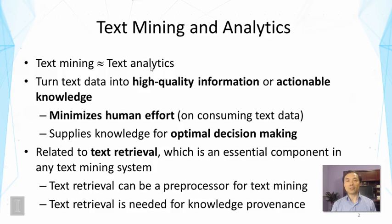The other kind of output is actionable knowledge. Here we emphasize the utility of the information or knowledge we discover from text data — it's actionable knowledge for some decision problem or some actions to take. For example, we might be able to determine which product is more appealing or a better choice for a shopping decision. Such an outcome could be called actionable knowledge because a consumer can take the knowledge and make a decision and act on it. So in this case, text mining supplies knowledge for optimal decision making. But again, the two are not so clearly distinguished.